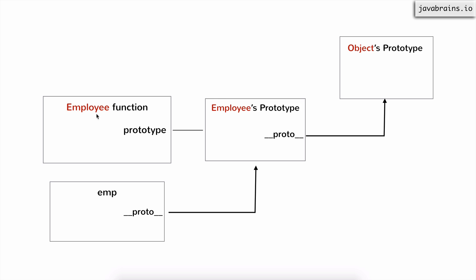Let's say I have an employee function which is going to create employee instances, and I have things on the employee's prototype so that every employee gets them. What I want to do is create some manager objects. These managers are also employees — it makes sense that they are employees and they get all the employee properties, but then you can have properties which are specific to manager.